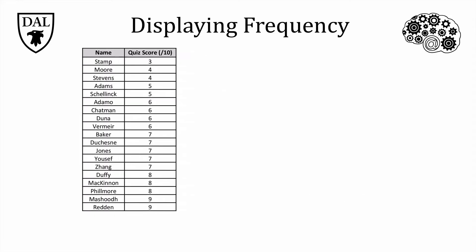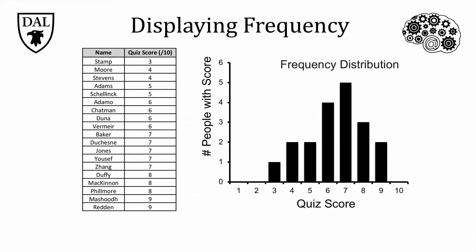Something else you can do is display the data in a graph by plotting a frequency distribution. You put your measure of interest on the x-axis at the bottom — in this case quiz scores — and the number of people who got each score on the y-axis on the left. It's obvious that most people got a 7, and we can see the overall pattern of grades more easily in this figure compared to the table.